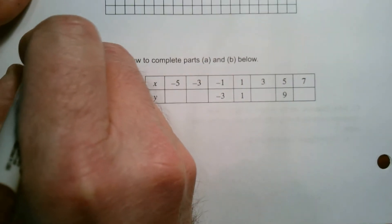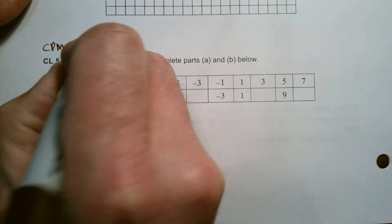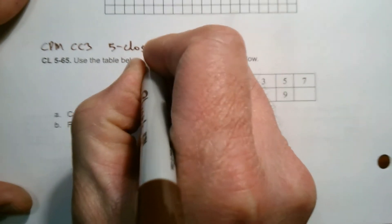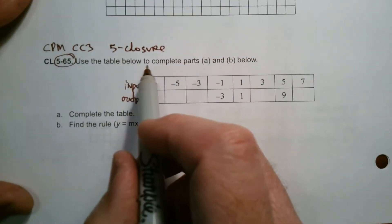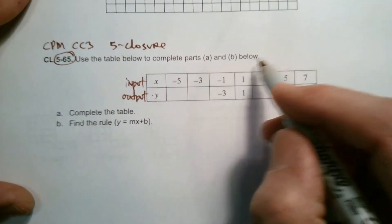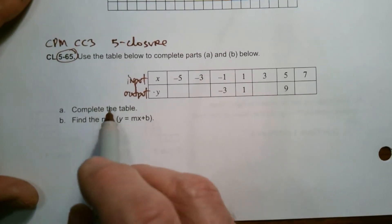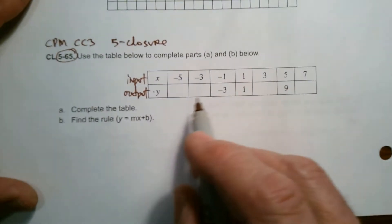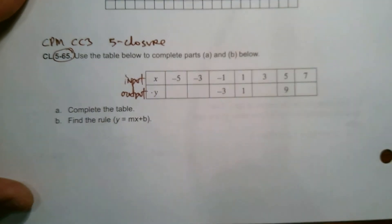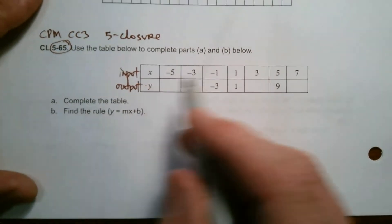So this problem is coming from CPMs, course three, and this is chapter five closure. This is numbers 565. It says use the table below to complete parts A and B. So first of all, it wants us to complete the table, but in order to complete the table, it'd be easier to kind of determine what that rule might be. What's that pattern that we see?